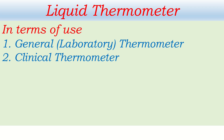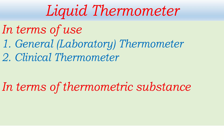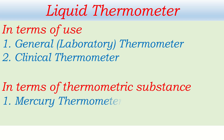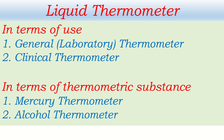In terms of use, it is classified into two types. In the same way, in terms of thermometric substance — which liquid is used inside — it is classified again into two types: mercury thermometer, if mercury is used to find the temperature, and alcohol thermometer, if alcohol is used inside to find the temperature.